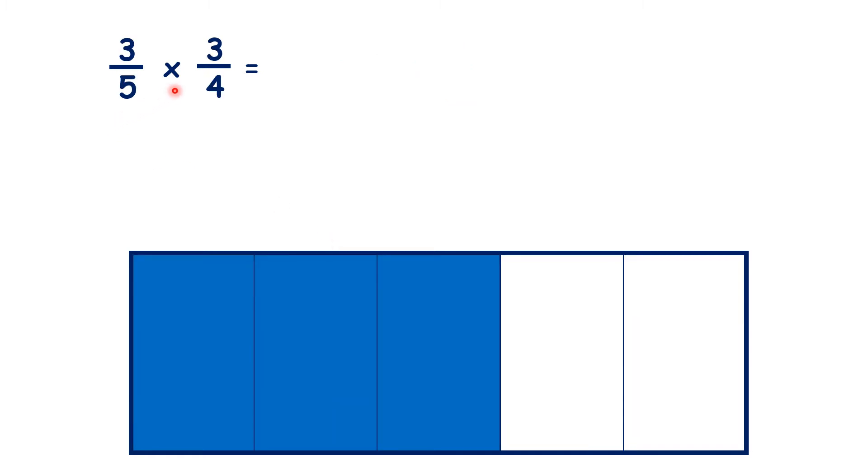So what is three-fifths times three-quarters? We're multiplying our numerators together, then multiplying our denominators together, so our answer is nine-twentieths.